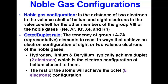Now let's introduce the noble gas configuration. Noble gases are so stable — their valence shells are completely full. Noble gas configuration refers to the existence of two electrons in the valence shell of helium and eight electrons in the valence shells of other group 8A elements — neon, argon, krypton, xenon, radon — all with full valence shells, making them very stable and unreactive.